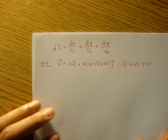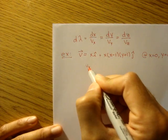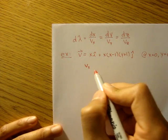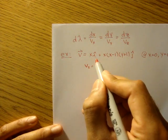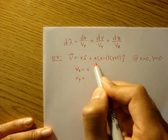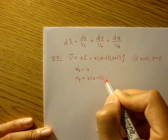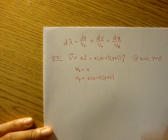So very first thing, let's write down our vx, our x component of our velocity field, which is just x in this case. And our y component, which is this big thing right here. And that's equal to x times x minus 1, y plus 1.